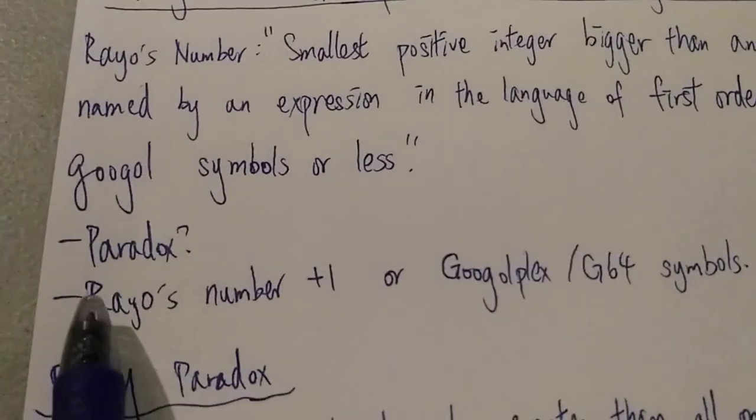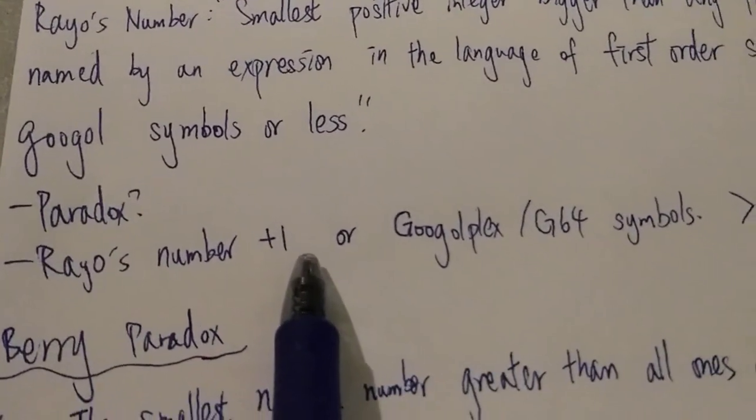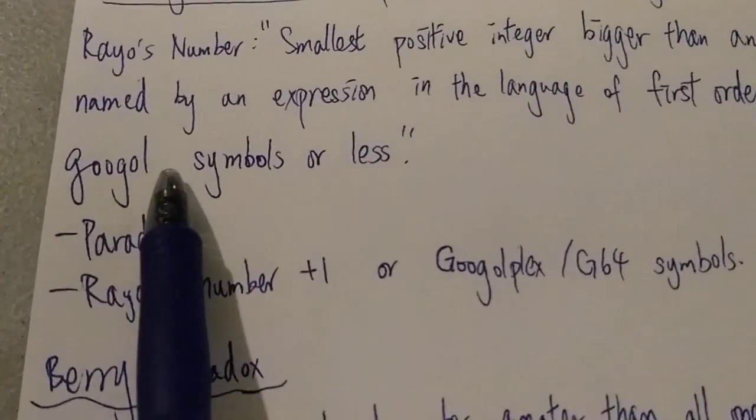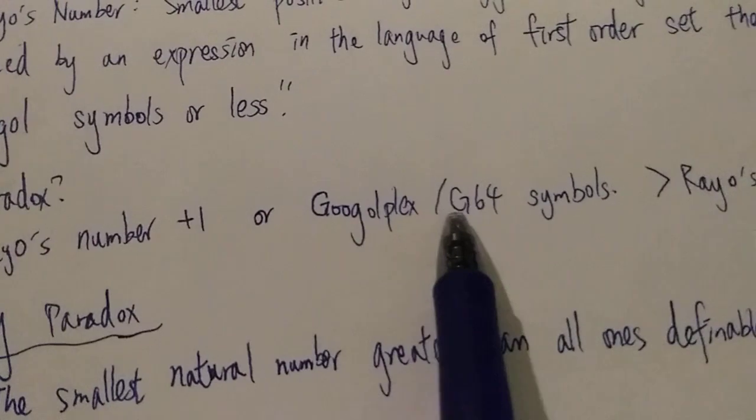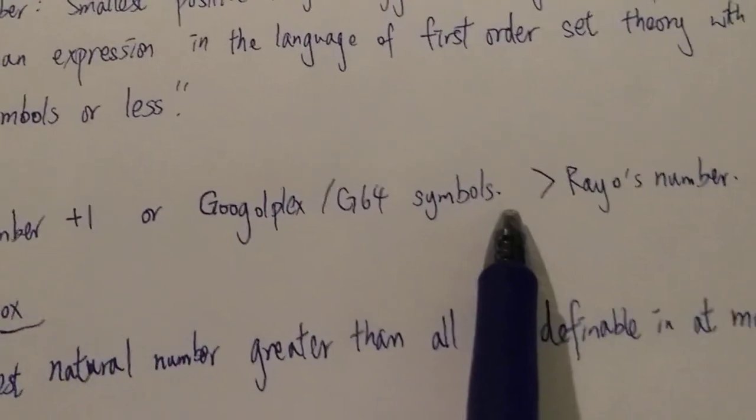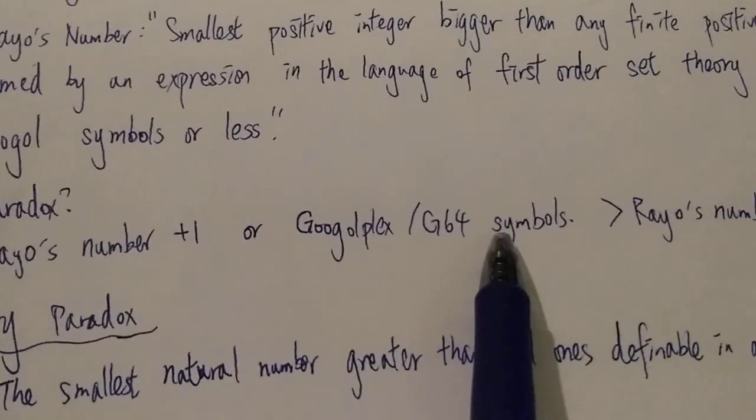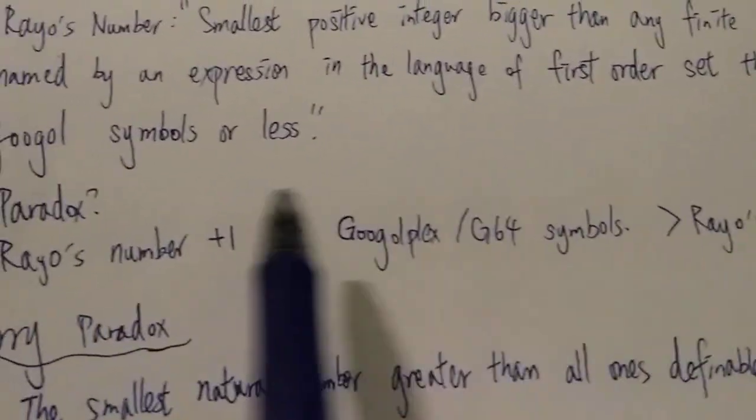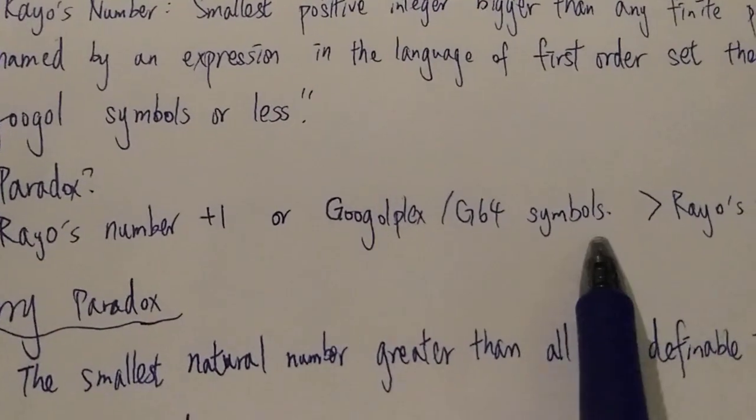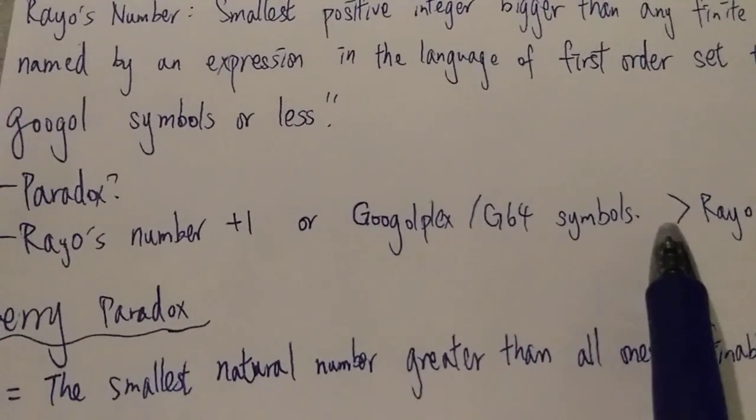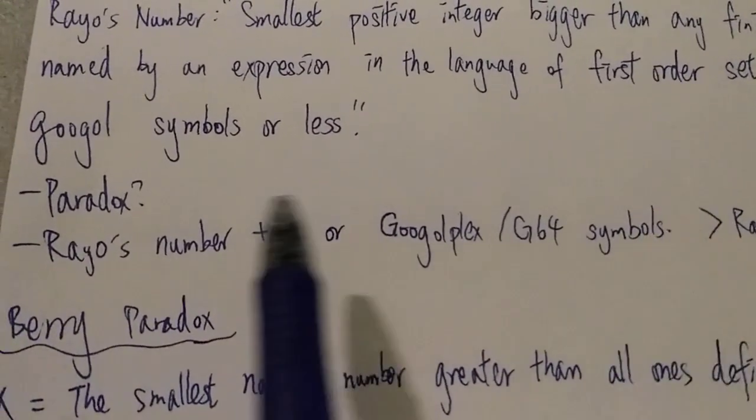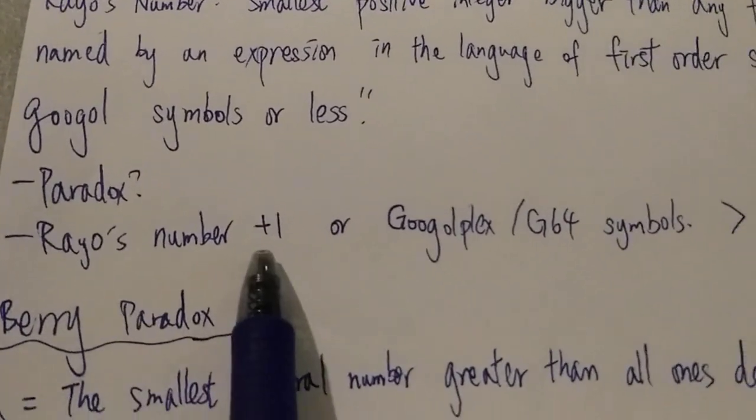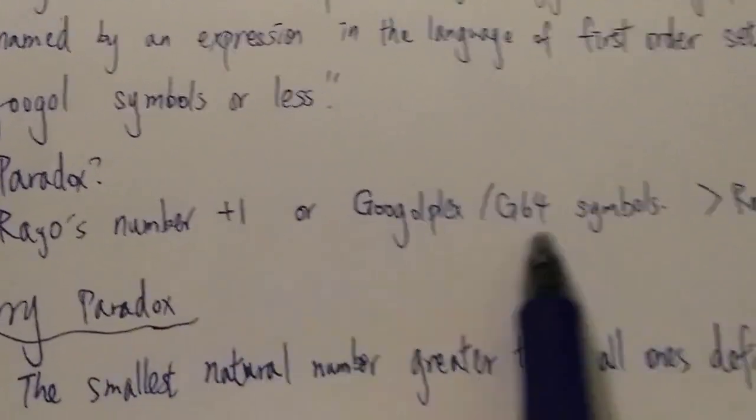Some people are saying Rayo's number plus one, or you change googol symbols to a googolplex or even like G64 symbols, these will be bigger than Rayo's number. And at the same time, these are obviously defined with less than a googol symbols. So this is just a few symbols, like less than 20 symbols.